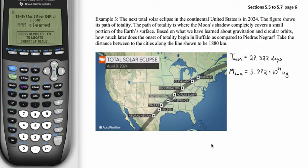Okay, so in this problem we are asked indirectly about the velocity of the moon. The way it's phrased is the next total solar eclipse in the continental United States is in 2024. The figure shows its path of totality. The path of totality is where the moon's shadow completely covers a small portion of the Earth's surface. Based on what we have learned about gravitation and circular orbits, how much later does the onset of totality begin in Buffalo as compared to Piedras Negras, and we're given the distance as 1,880 kilometers.